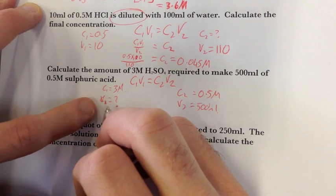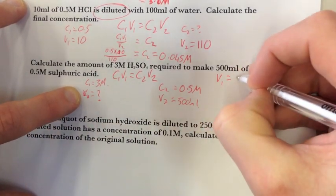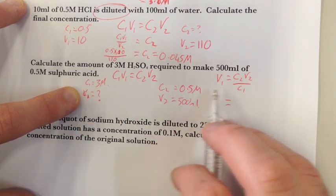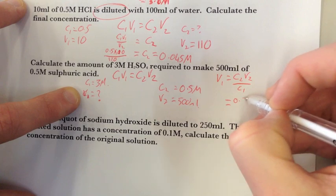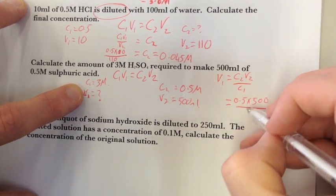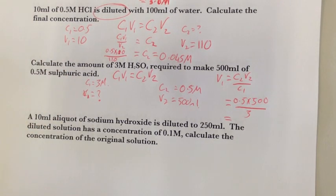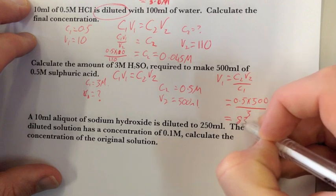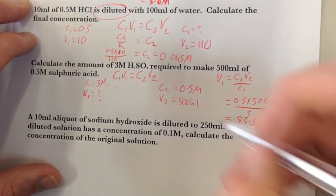So obviously I need to work out V1. So I'll rearrange my equation to make V1 the subject equals C2V2 over C1, and I'll bang in these values. So obviously I'm just taking this down to the bottom here. 0.5 times 500 divided by 3. Let's just work that out on a calculator. I need 83.3 mil. Because I'm using mil here, my calculation, my answer comes out in mil.